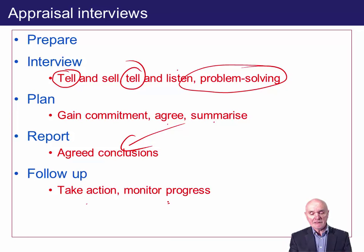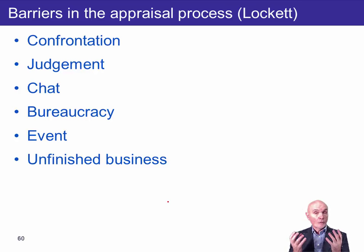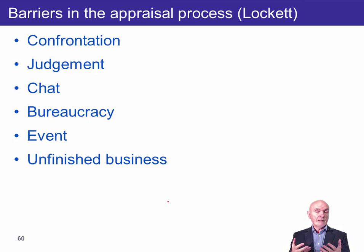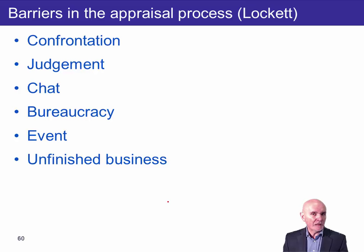Not all appraisals go smoothly. Lockett has suggested six ways in which the appraisal process can be less than perfect. The first is confrontation, where the manager and subordinate fall out and have a strong disagreement. The manager may be taking a tell-and-sell approach which the subordinate simply doesn't accept. Emotions rise, and once emotions rise you're almost incapable of taking good advice on board. You leave the appraisal feeling fed up — it's certainly not developing you, and it's difficult to see how your performance will improve.